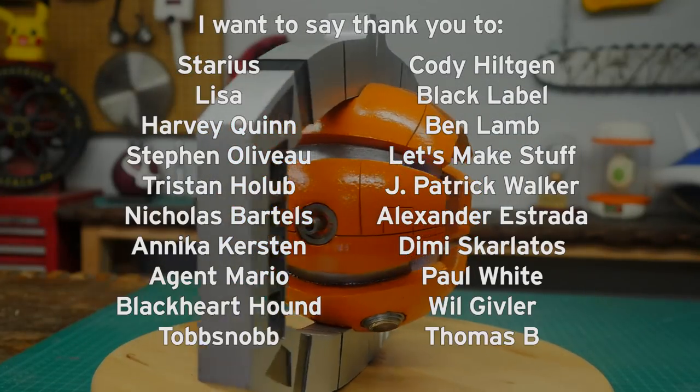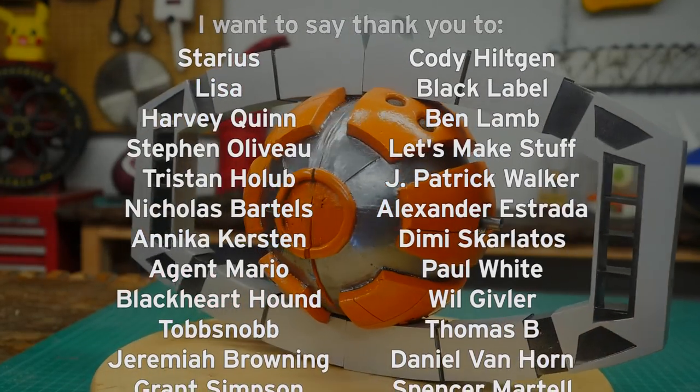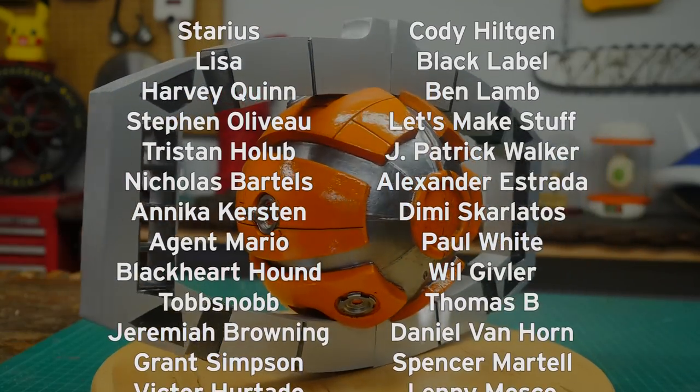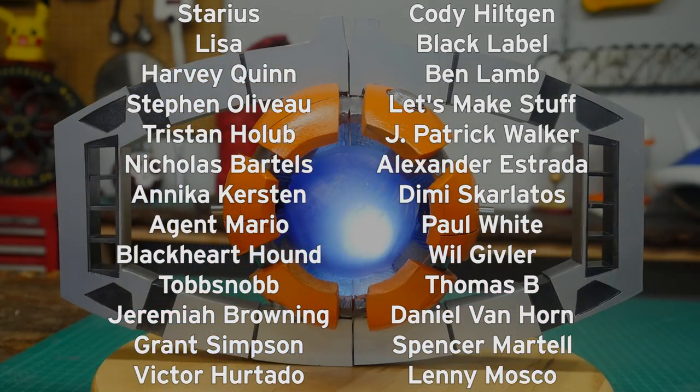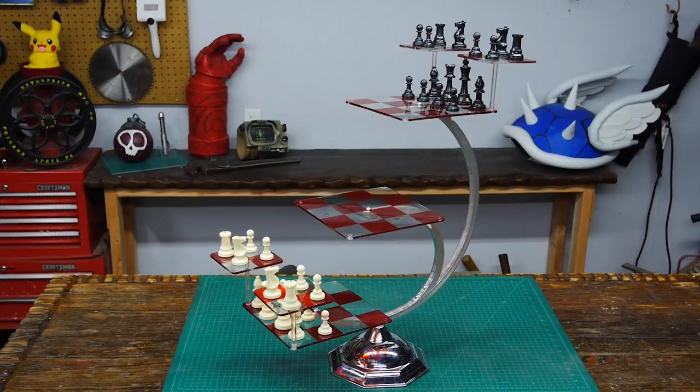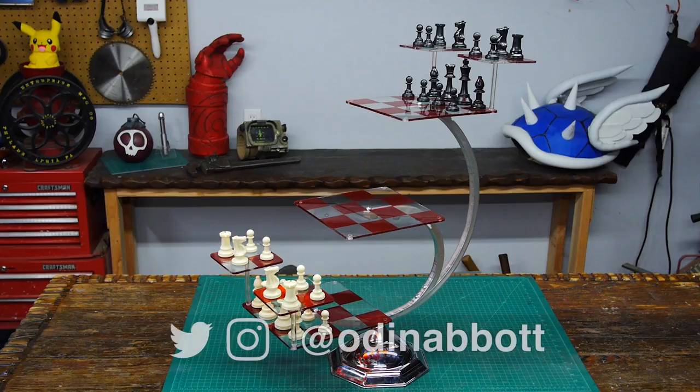I have a Patreon page where I give away props that I've made right here in the show. And September's winner is Paul White. Paul won the Matrix of Leadership from Transformers the movie. If you like the video or have ideas for something for me to make, please leave them in the comments below. And if you make any of these projects, you can send me a picture.